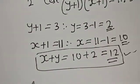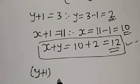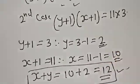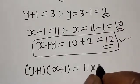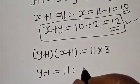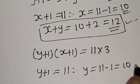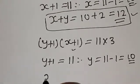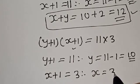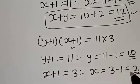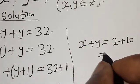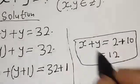Second case: (y plus 1) times (x plus 1) equals 11 times 3. That means y plus 1 equals 11, therefore y equals 11 minus 1 which is 10. And x plus 1 equals 3, therefore x equals 2. For the second case, x plus y equals 2 plus 10, which is equal to 12.